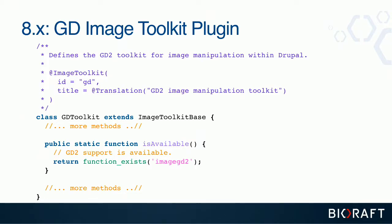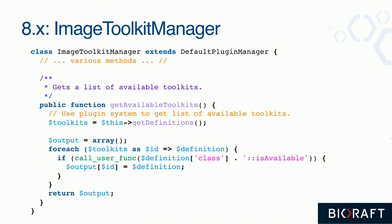In Drupal 8, the plugin manager has a 'getAvailableToolkits' method that calls the isAvailable method on each image toolkit — just like in Drupal 7 where we dynamically set a property saying whether the toolkit is available in the current PHP version. These two approaches work almost exactly the same; it's just the way we access that information that's different.